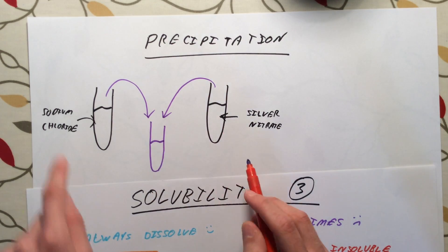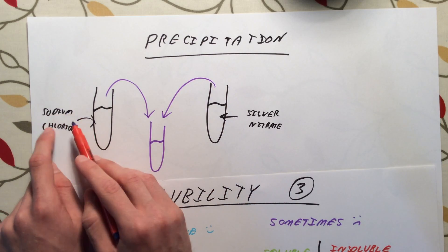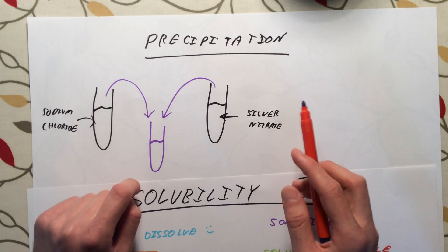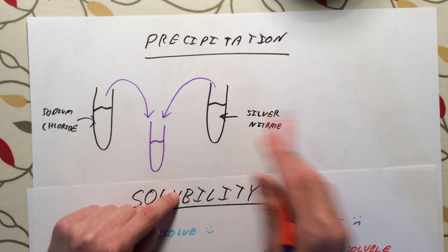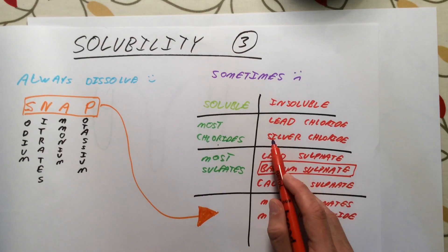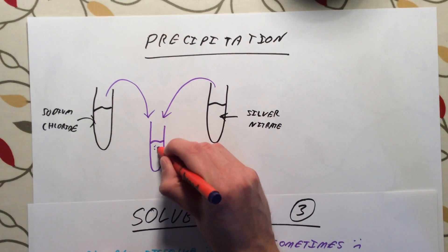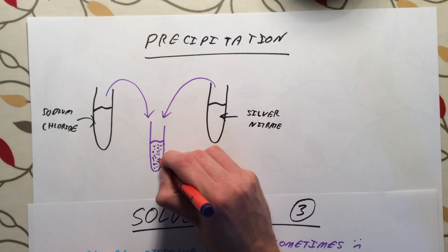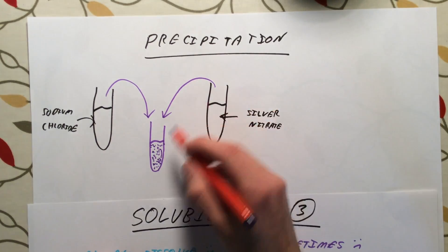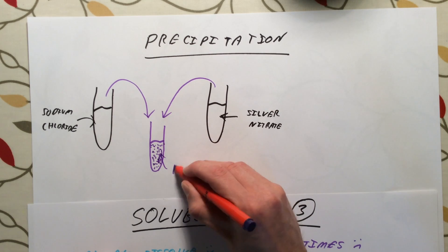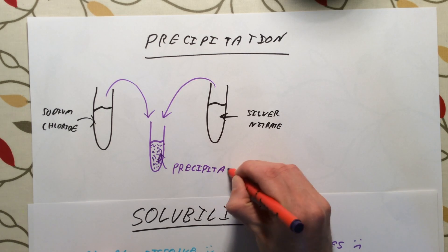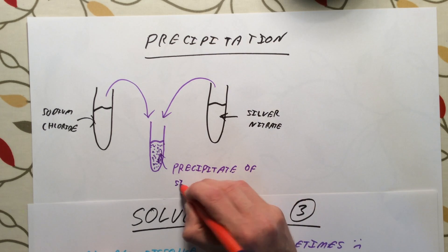When we do that, we are going to form sodium nitrate which does dissolve, but we are also going to form silver chloride. If we look back to our list, silver chloride is one of our insoluble salts, it does not dissolve. We are going to get a solid that is formed when we do this reaction. We call this solid a precipitate. Precipitate of silver chloride.